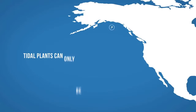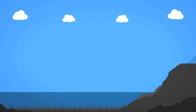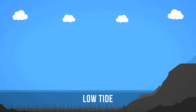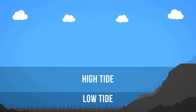Tidal plants can only be installed along coastlines. Coastlines often experience two high tides and two low tides on a daily basis. The difference in water levels must be at least five meters high to produce electricity.